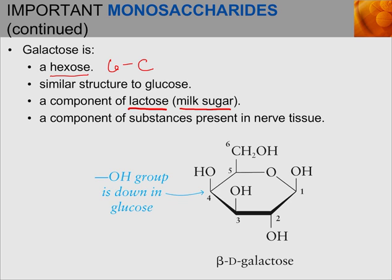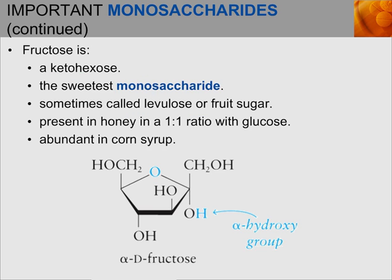Galactose is also a hexose with a very similar structure to glucose. It's a component of lactose, the sugar found in milk, and a component of substances present in nerve tissue. Fructose is a keto hexose — it has a ketone at the top instead of an aldehyde, giving it a five-membered ring in its cyclic form. Fructose is the sweetest monosaccharide, sometimes called levulose or fruit sugar. It's present in honey in a one-to-one ratio with glucose, and is very abundant in corn syrup.